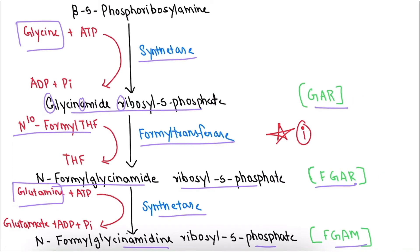So in the second slide, you have to remember GAR, FGAR, and FGAM — or you can remember these as GA, FGA, and FGAM, noting that ribosyl-5-phosphate is common throughout all steps.